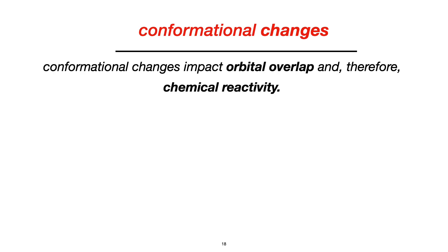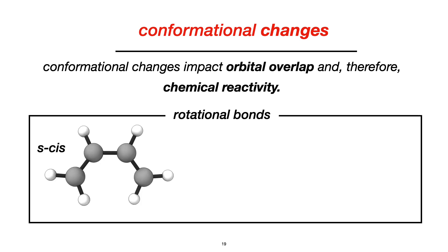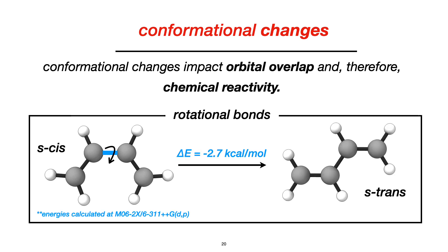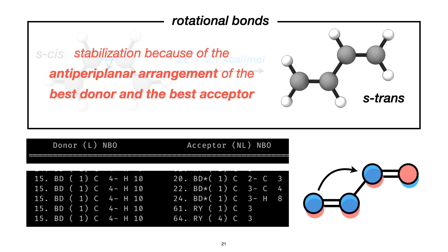Focusing on the context of exterior electronic effects, we certainly observe that conformational changes impact orbital overlap and chemical reactivity. Let us take the simple example of a cis diene. If we rotate the sigma bond to get the trans isomer, we have a stabilization of 2.7 kcal per mole, while the trans structure is more favored in this case. This happens because of the anti-bonding orbital arrangement of the best donor and best acceptor.